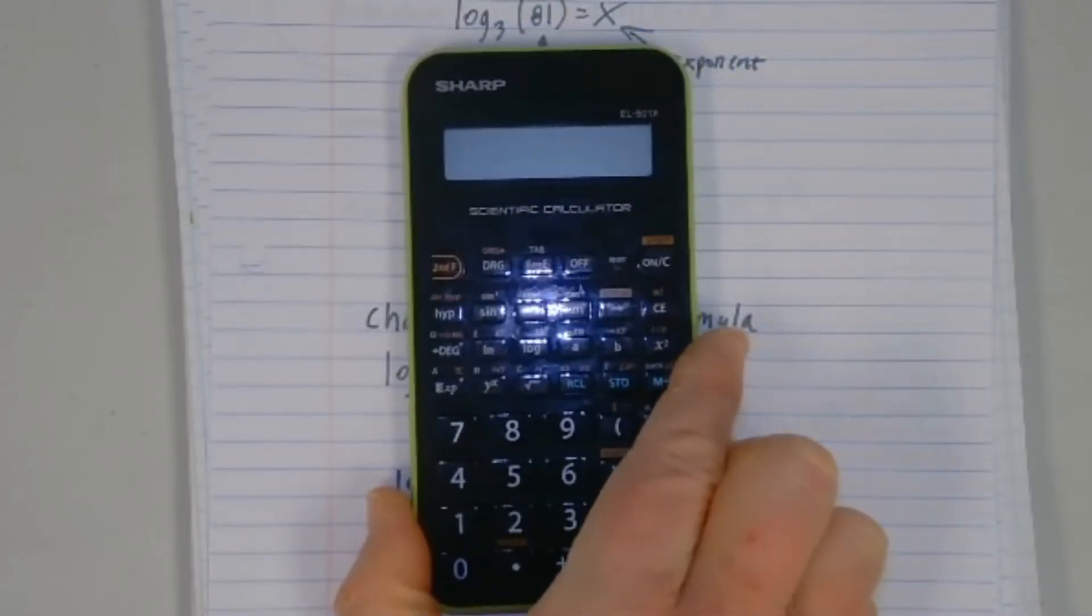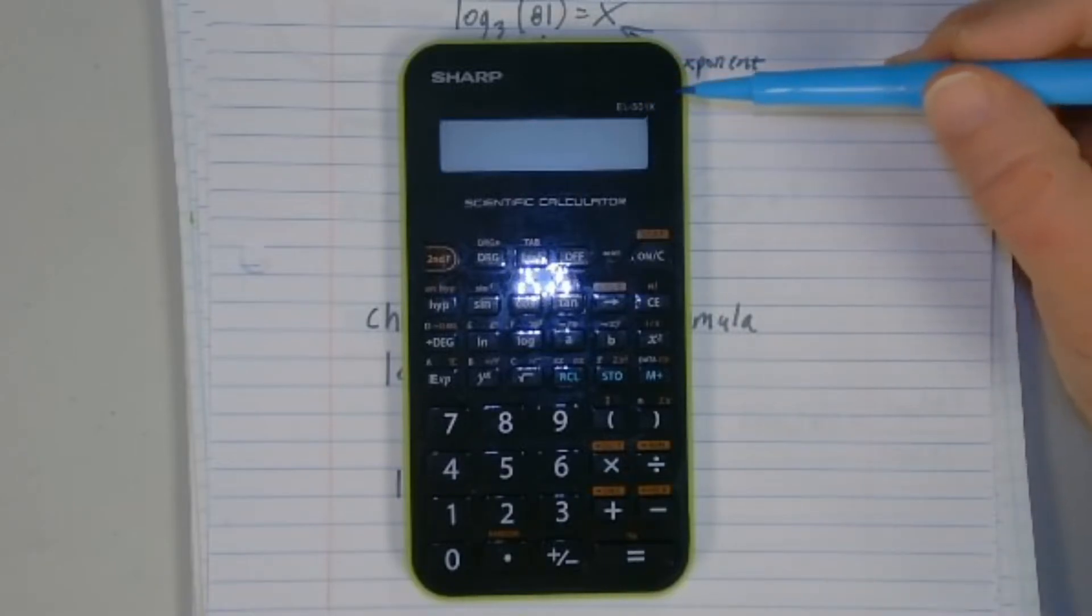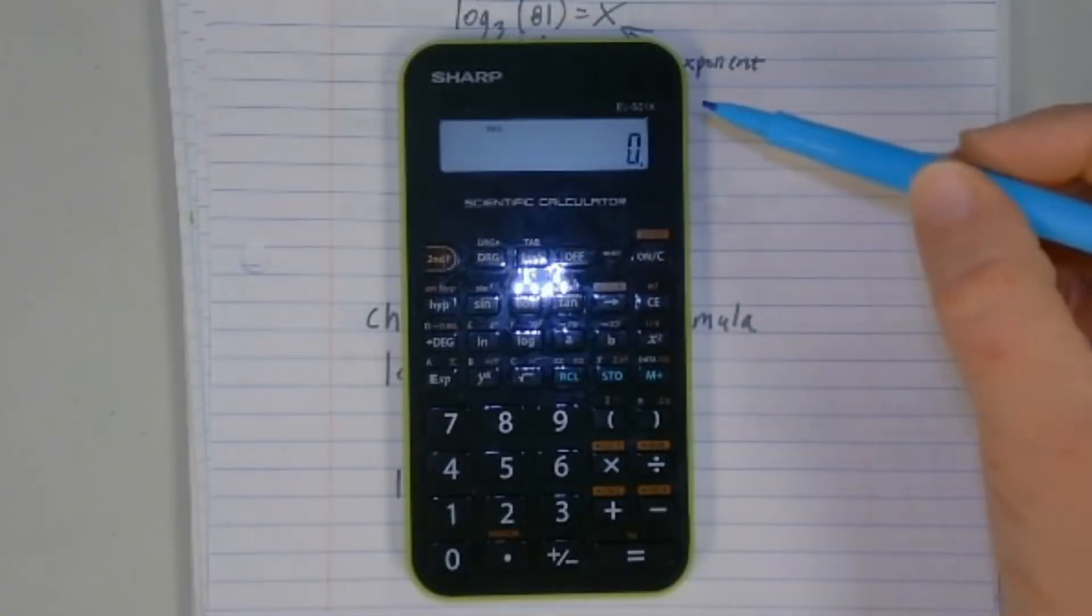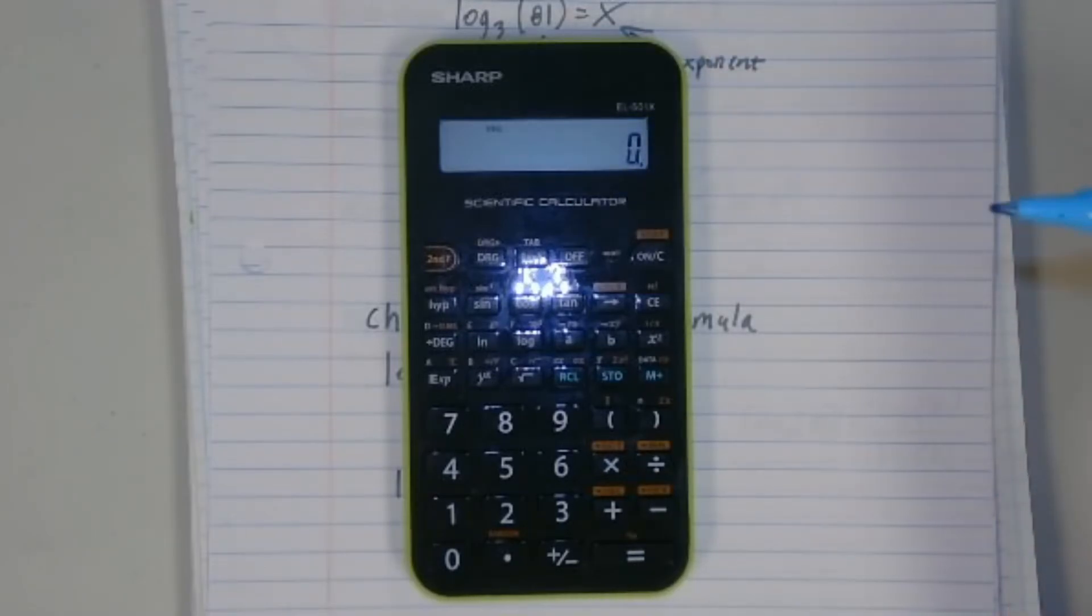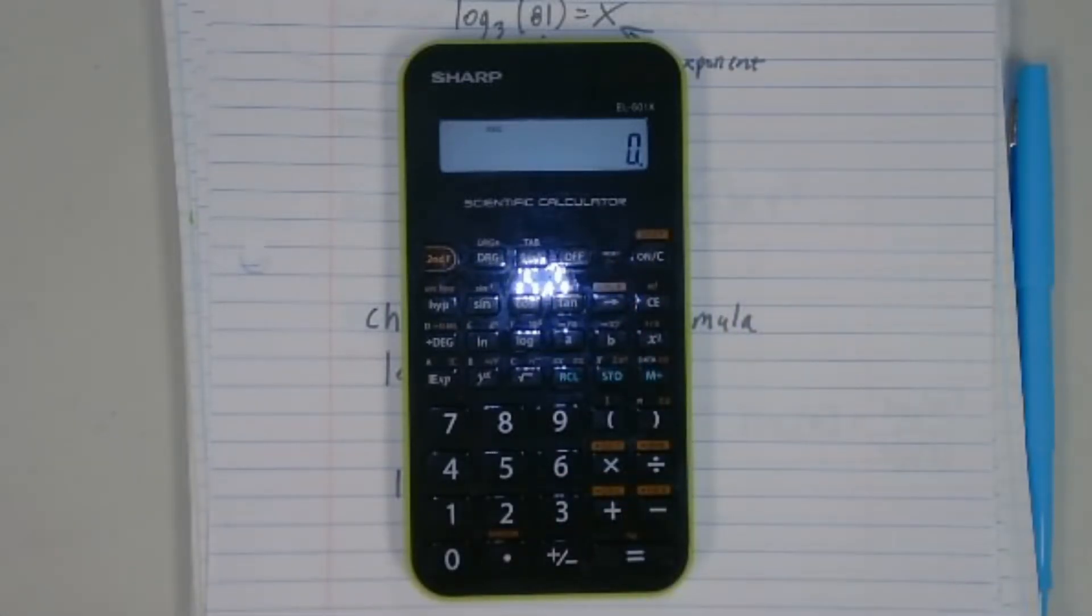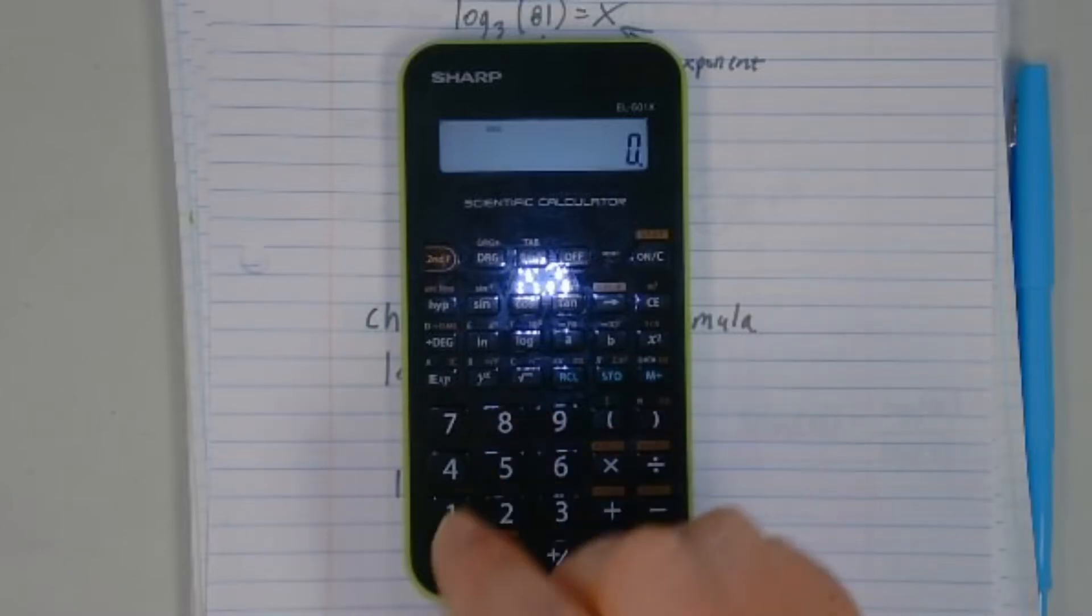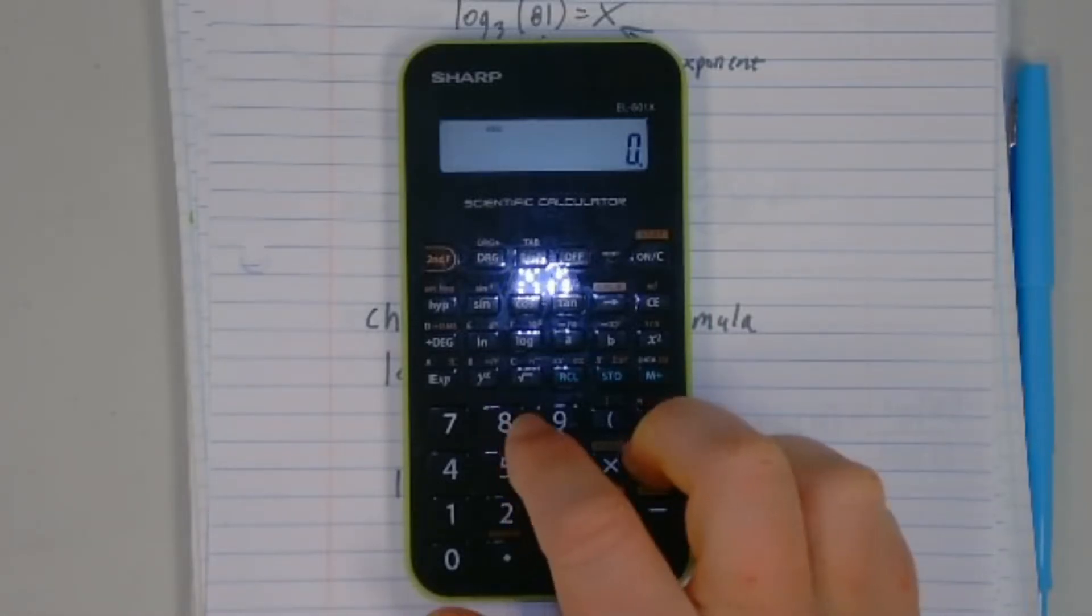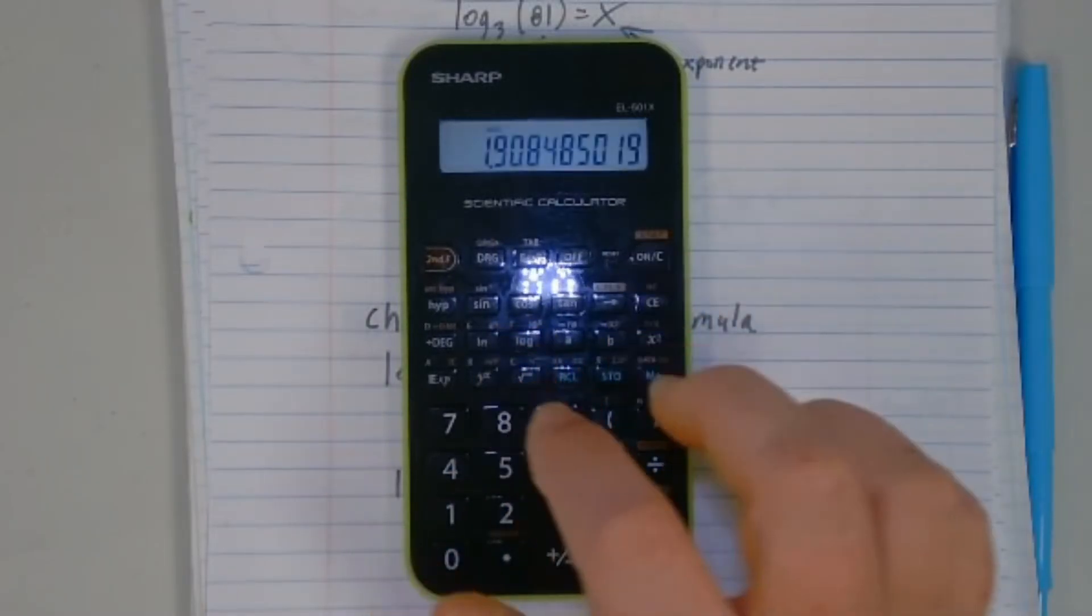Here's my third calculator. It is a Sharp EL-501X, and it is not quite as complicated in terms of what kind of display it has. It has just a one line display, and it doesn't show me what I've put in, it just shows me answers. And so if I try to type in an entire expression, it doesn't do it that way. It wants to have number and then what it's supposed to do with that number. So for example, when I hit log, it just kind of goes error, because it doesn't want to deal with the log of zero.